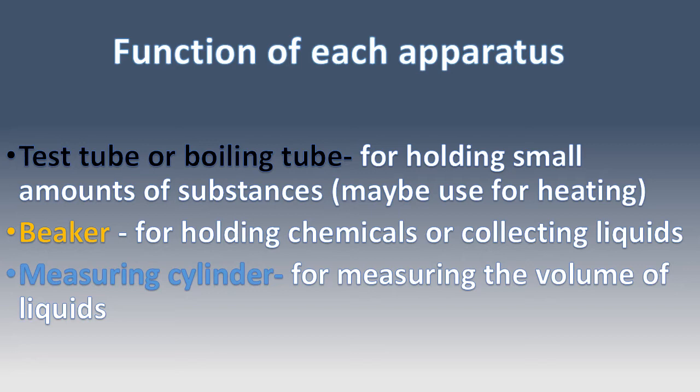Then we have the Beaker. The beaker serves two purposes: for holding different kinds of chemicals and for collecting liquids, for example like water. Then we have the measuring cylinder, which is for measuring the volume of liquid — the amount of space that liquid takes up.